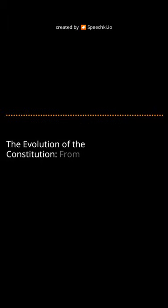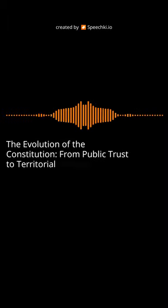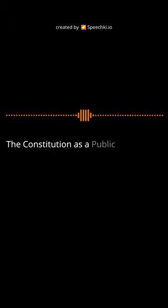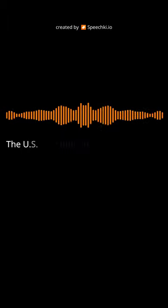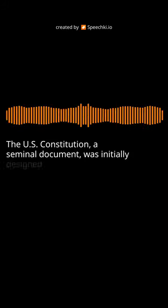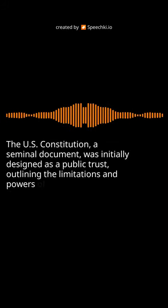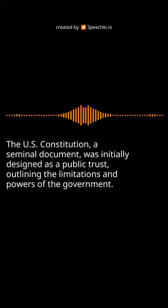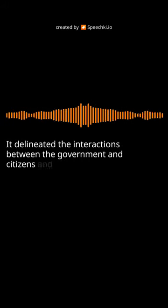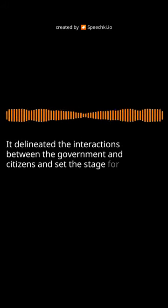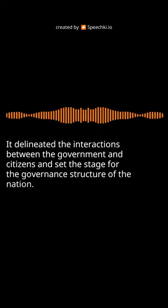The evolution of the Constitution: from public trust to territorial authority. The U.S. Constitution, a seminal document, was initially designed as a public trust, outlining the limitations and powers of the government. It delineated the interactions between the government and citizens and set the stage for the governance structure of the nation.